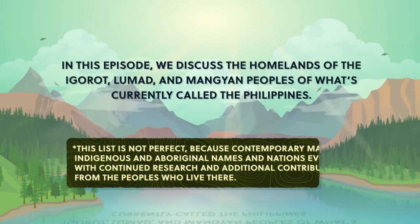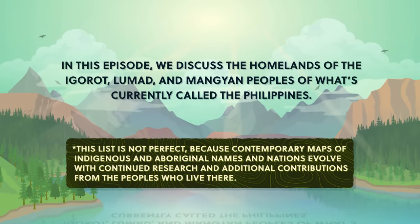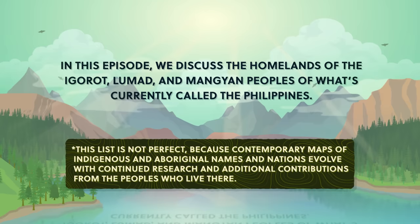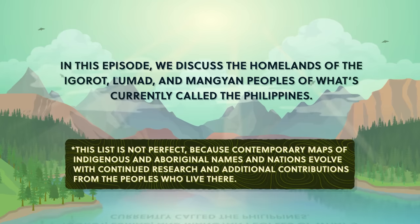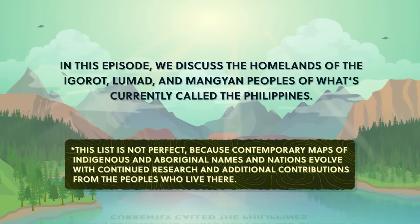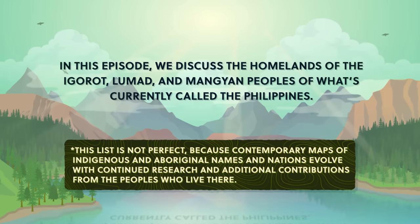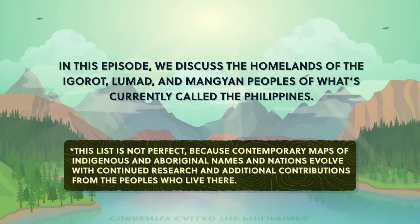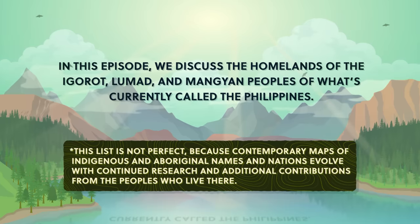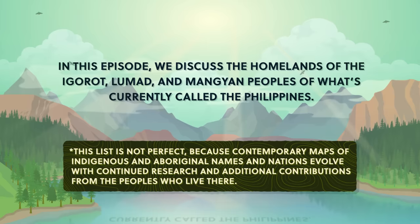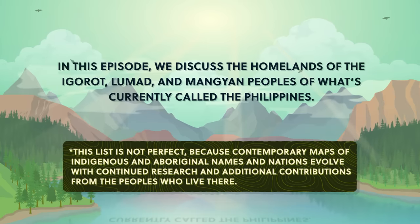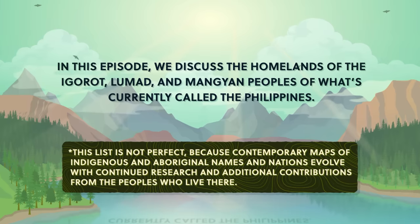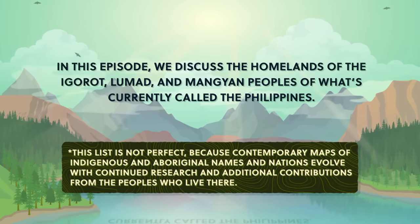Many maps and borders represent modern geopolitical divisions that have often been decided without the consultation, permission, or recognition of the land's original inhabitants. Many geographical place names also don't reflect the indigenous or aboriginal people's languages. We at Crash Course want to acknowledge these people's traditional and ongoing relationship with that land, and all the physical and human geographical elements of it. We encourage you to learn about the history of the place you call home through resources like nativeland.ca and by engaging with your local indigenous and aboriginal nations through the websites and resources they provide.